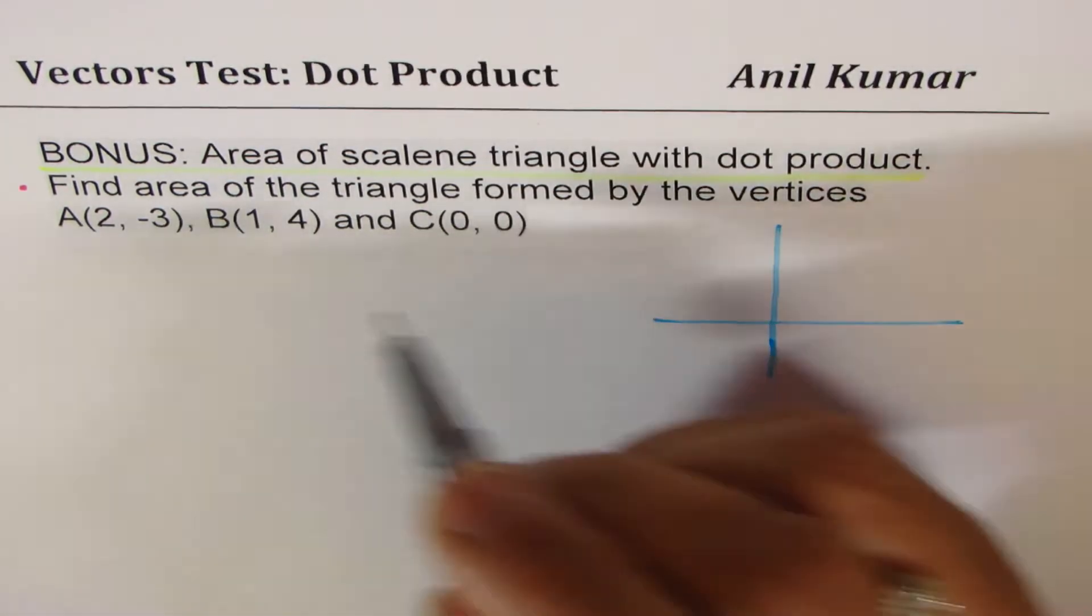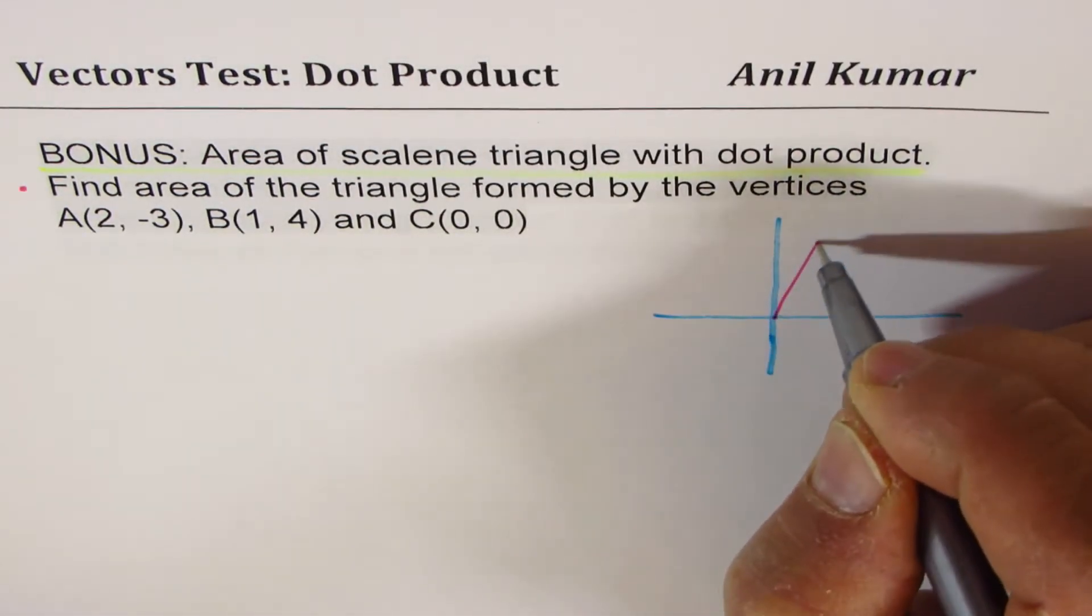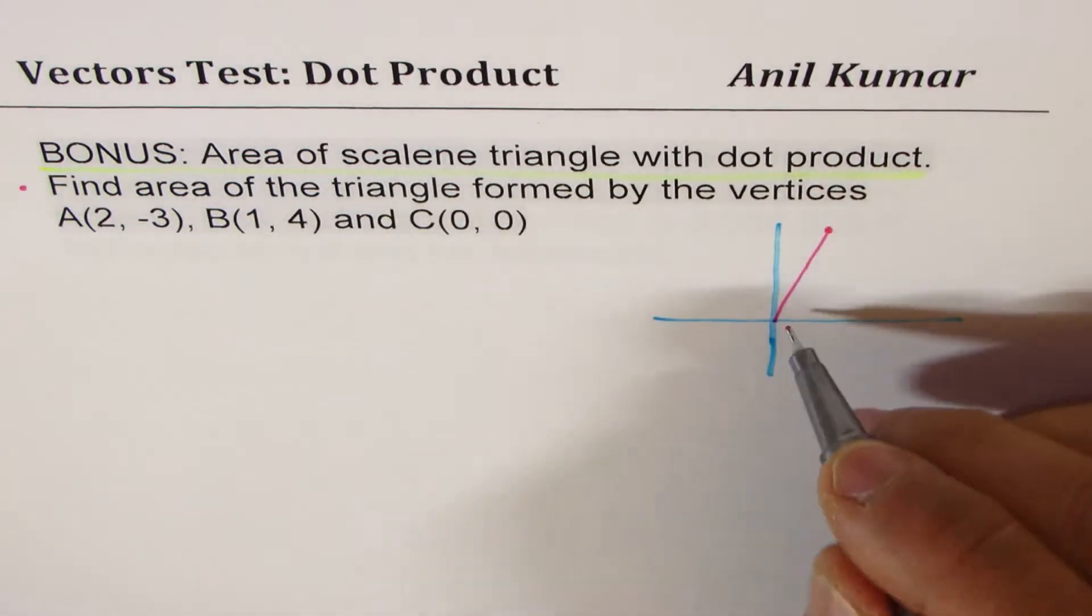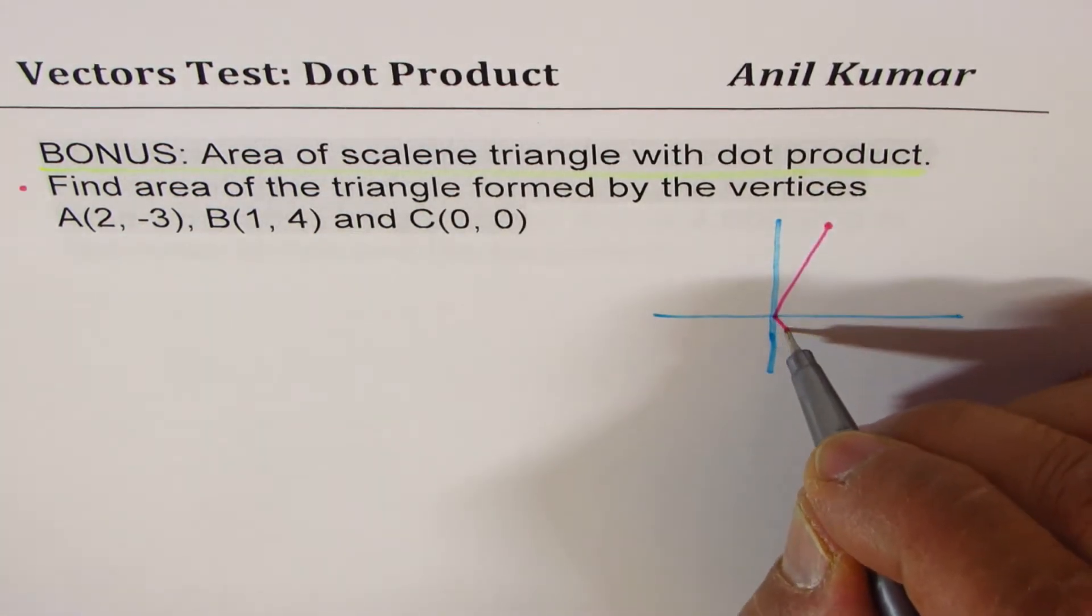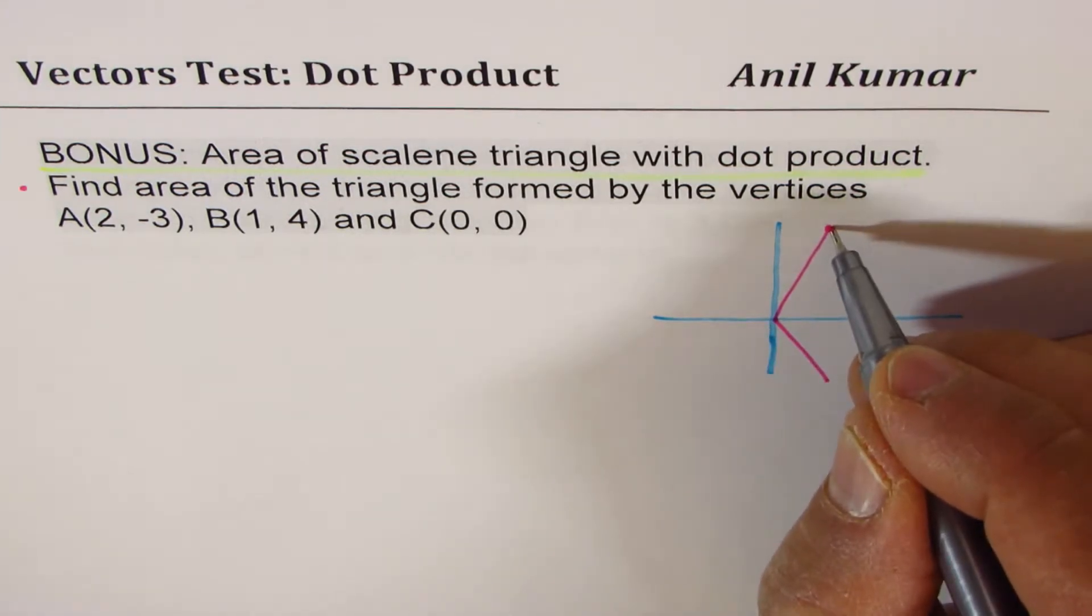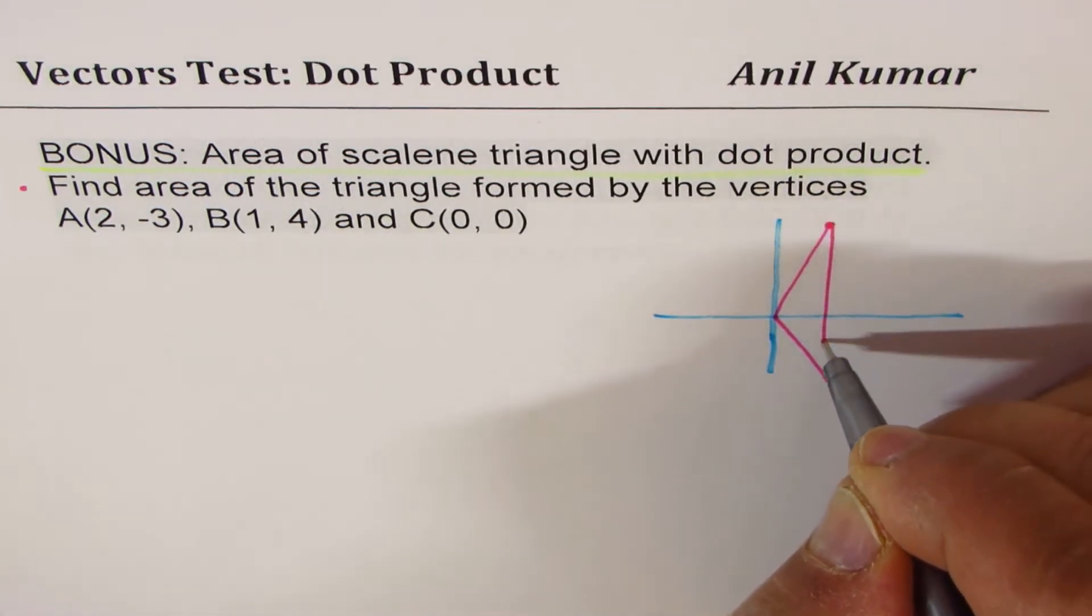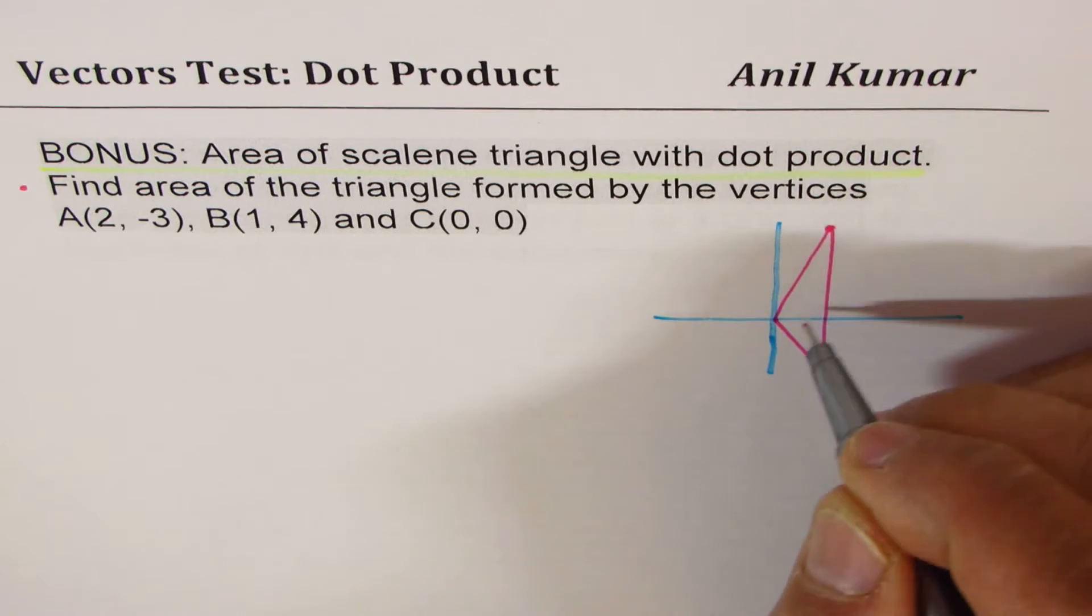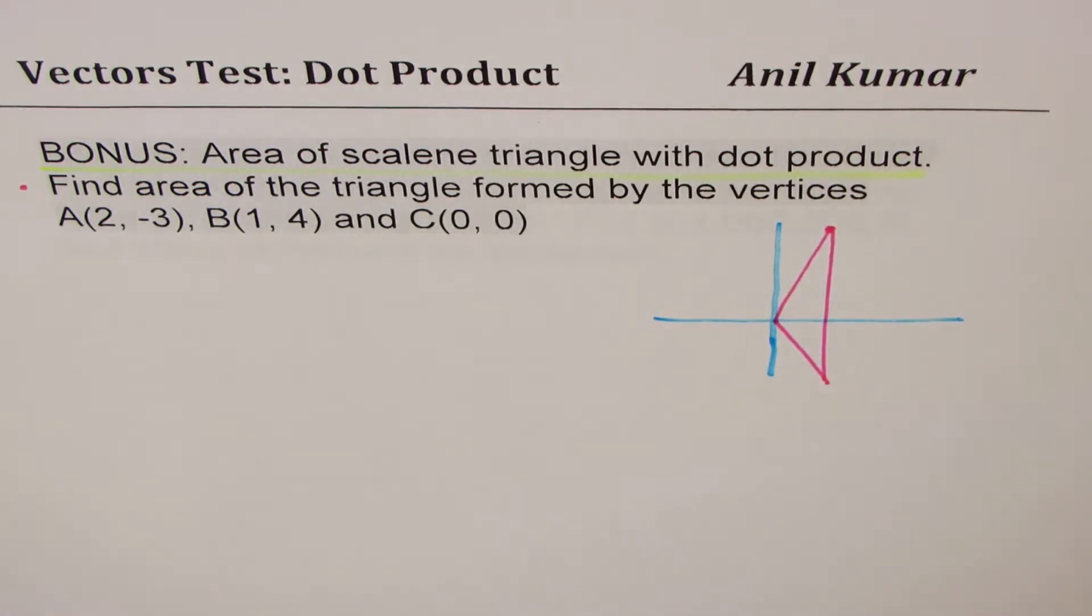B is (1, 4), let's say this is B for us, and A is (2, -3). This is C(0, 0), and the triangle formed is kind of like this. We have to find the area of this triangle. How will you find it?